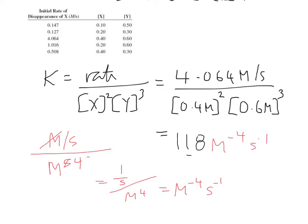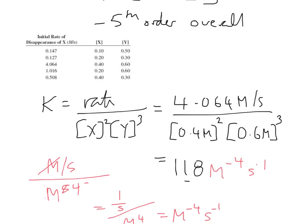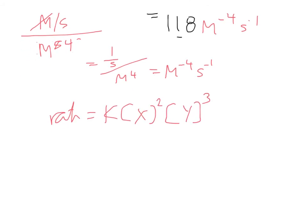Now we need to find the rate, and now we've got the rate constant. We can just substitute in the value for X and the value for Y, so 0.3 molar for X and 0.4 for Y. Let's go ahead and do that. Our rate is equal to K times by X squared times by Y cubed. Now we know all of these things. Our rate is equal to 118 molar minus four seconds minus one times by X, which is 0.3, times by Y, which is 0.4.